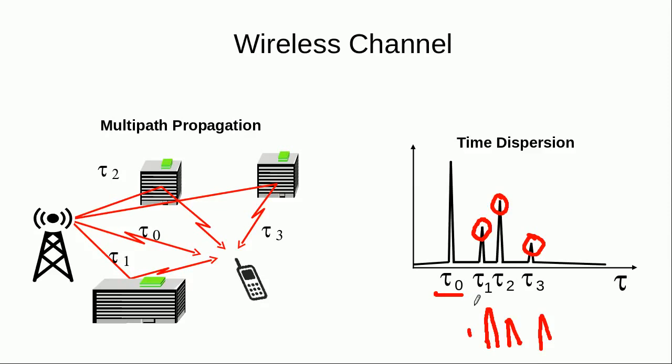And this would lead to distortion of our signal, and we call it as the ISI or intersymbol interference.